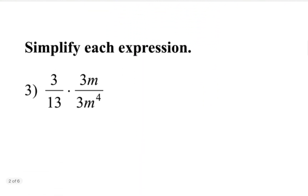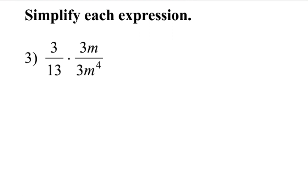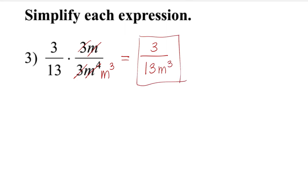Let's try another problem. We are asked to simplify this expression. We can cancel the 3 in the numerator and the 3 in the denominator. Then we cancel one M, but the M in the denominator will have M to the 3rd power because we already took out one of the M's. There is nothing else to cancel, so our answer is 3 over 13M to the 3rd power. Because the denominator contains a variable, the excluded value is M cannot equal 0, since that would make the denominator 0.